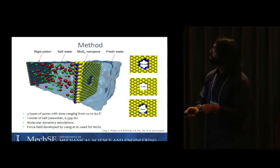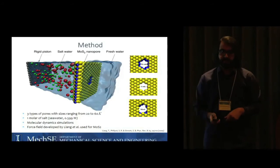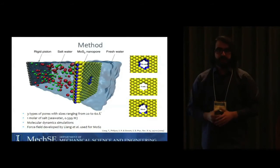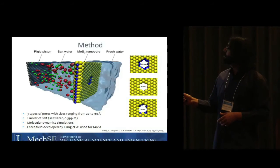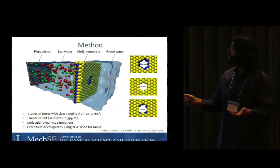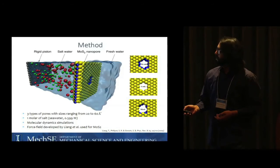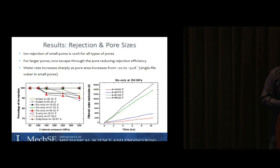We considered three different types of nanopore. The first two are really ideal. The first one is the Mo only pore where at the constriction region of the pore we only have molybdenum atoms. The other one is the S only pore where we have only sulfur atoms at the edge. We also considered the mix case which is more realistic.